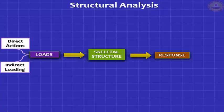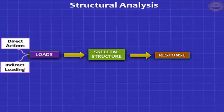These structures are subjected to different types of loads. The loads are commonly direct actions, but you can also have indirect loading — for example, support settlements, constructional errors, and environmental loading. The direct actions are due to forces directly applied to the structure. The response we are interested in has two parts: the force response, typically bending moments, shear forces, axial forces, and support reactions; and the displacements, which are the deflections and slopes.